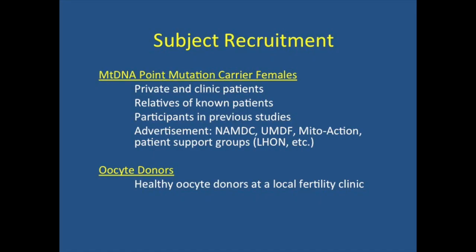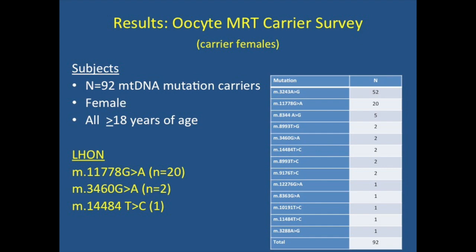We recruited from many different places, and I wanted to thank Lissa, who was very instrumental in mobilizing the community. We really needed additional mutations and additional patients in the study, and she was awesome in getting your community involved. Thank you to everybody for completing surveys and getting involved. Our healthy oocyte donors were from the local clinic. We had 92 women who were mutation carriers or at risk of being a carrier, all 18 years of age. We had three of the top mutations in the LHON group: 20 from the 11778, two from the 3460, and one from the 14484 — so 23 people in the survey are from your community.